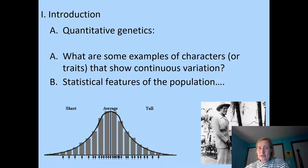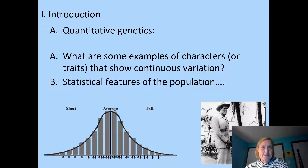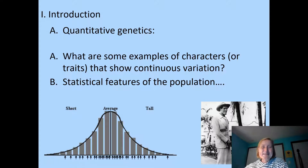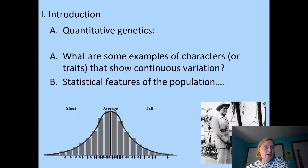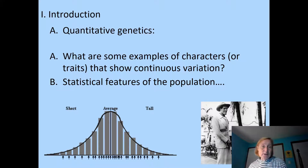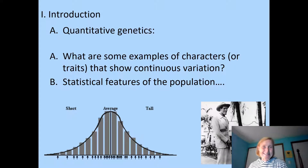Quantitative genetics is, by definition, the study of characters that show continuous variation. Most behavior traits fit into this category. We also want to study the mechanisms underlying this variation. So if you're a quantitative geneticist, you're going to be looking at traits that show continuous variation and trying to figure out what mechanisms contribute to that continuous variation.